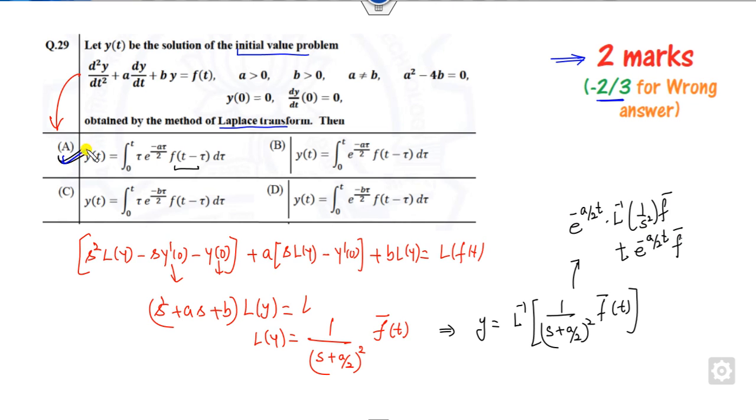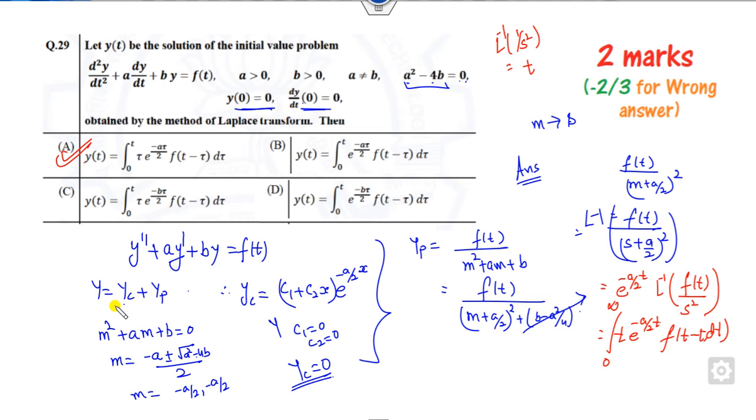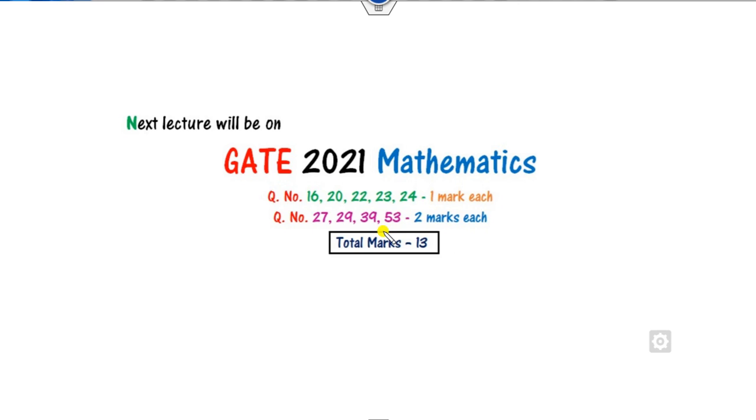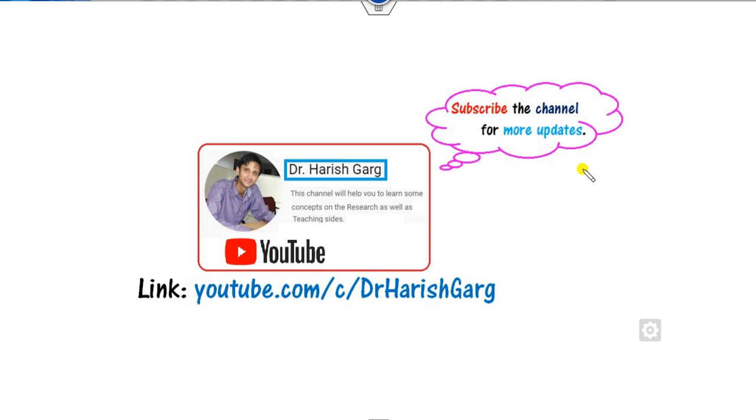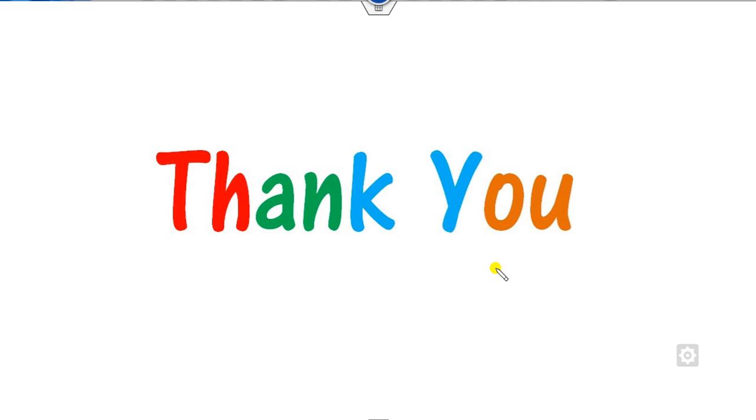The concept is if you are unable to remember the Laplace transformation in the competition exam, you may use the y complement and y particular solution technique also. You will get the same answer. So that's why the right answer of this problem is option A. In the next class we will see some more questions related to questions 39, 53 and many more. Till then you can subscribe this and share this video to your friends. Best of luck.